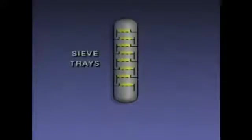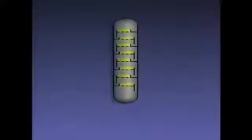Fractionation is distillation that occurs at different levels in a tower. This is a simplified illustration of the inside of one type of distillation tower. This tower uses trays called sieve trays to separate vapors and liquid. The trays are spaced throughout the tower. They're called sieve trays because they have many openings in them, like a sieve.